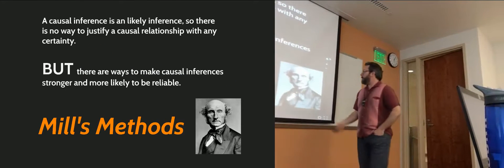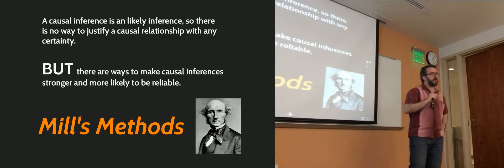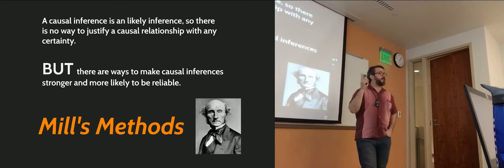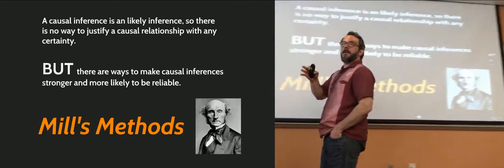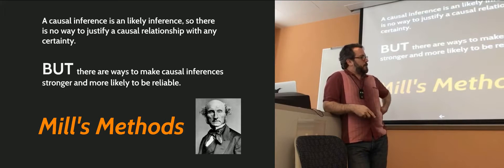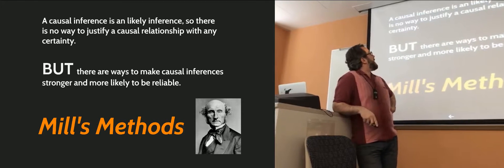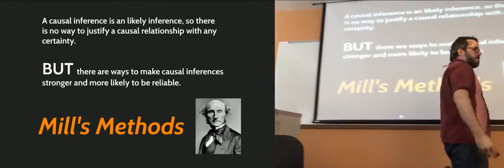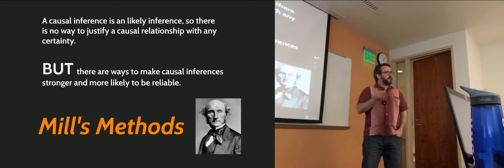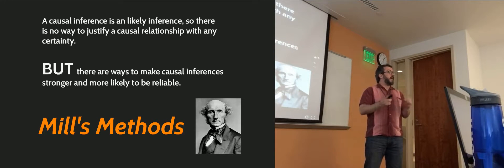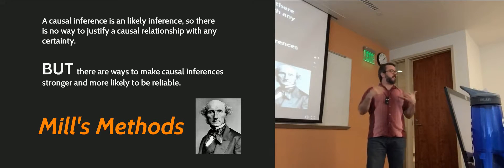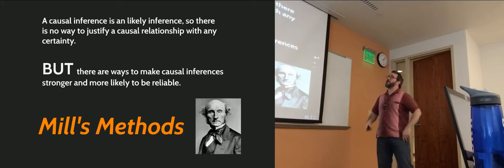In order to get into this, we're going to revisit our old friend John Stuart Mill. We mentioned John Stuart Mill when we were talking about moral arguments — he was one of the founding fathers of utilitarian moral theories. In addition to being a brilliant moral philosopher, he was also a brilliant epistemologist, and worked out a fairly decent approach to determining when a causal connection is warranted versus when it seems like a spurious claim.